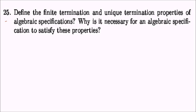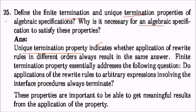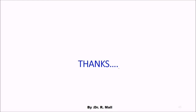Question 25: define finite termination and unique termination properties of algebraic specification. The unique termination property indicates whether application of rewrite rules in different orders always results in the same answer. The finite termination property addresses the question: do applications of rewrite rules to arbitrary expressions involving interface procedures always terminate? These properties are important to obtain meaningful results. Questions 22 and 25 are left as exercises — any problems, please comment. Thank you so much, take care.